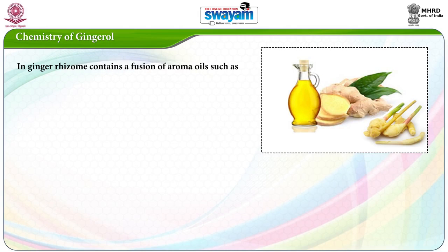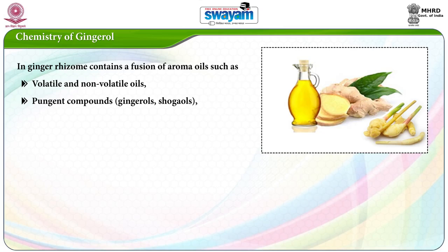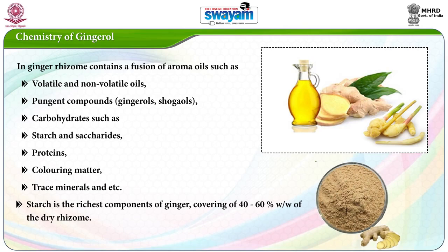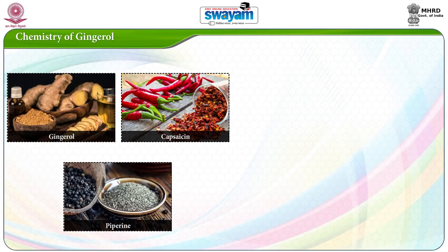The ginger rhizome contains a fusion of aroma oils such as volatile and non-volatile oils, pungent compounds like gingerols and shogaols, carbohydrates such as starch and saccharides, proteins, colouring matter, pressed minerals, and more. Starch is the richest component of ginger, covering 40 to 60% by weight of the dry rhizome. Chemically, gingerol is a relative of capsaicin and piperine, the compounds which give chilli peppers and black pepper their respective spiciness.